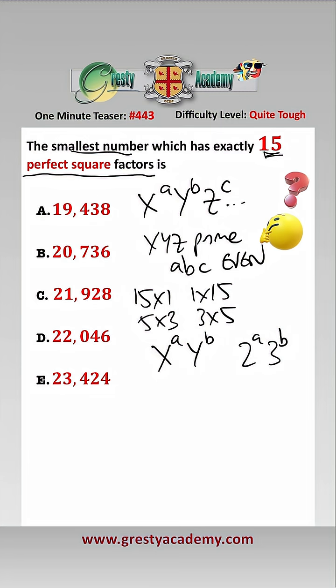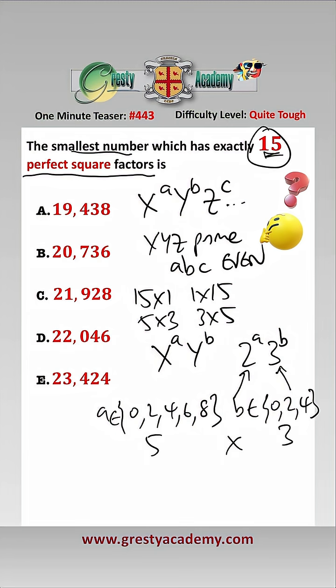Now, for 15 square factors to be true, we need 5 choices for a, and 3 choices for b. So, a must be contained in the set 0, 2, 4, 6, or 8, and b must be contained in the set 0, 2, or 4, which means that we have 5 choices here and 3 there, which would be 15 perfect squares, which is correct.